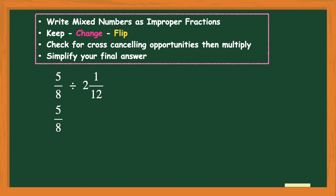I'll keep the 5/8 as-is since it's already a fraction, bring down the division sign, and now convert 2 and 1/12 into an improper fraction. We do that by multiplying the denominator by the whole number: 12 times 2 is 24, then add the numerator — 24 plus 1 is 25 — so the improper fraction is 25/12. Now I have a fraction being divided by a fraction, which lets me use the keep-change-flip strategy.